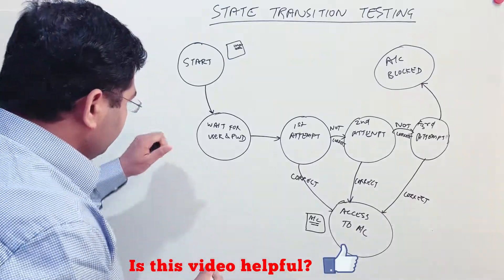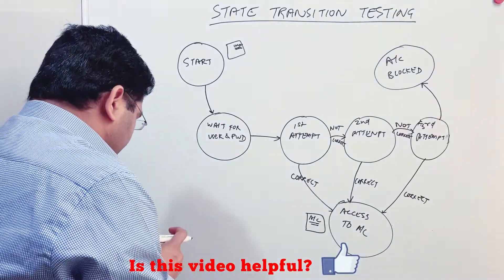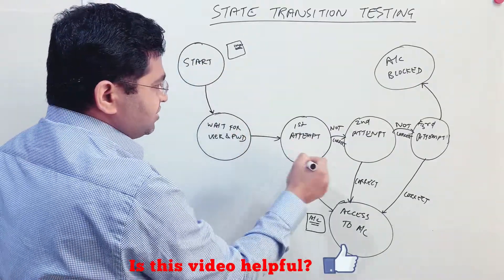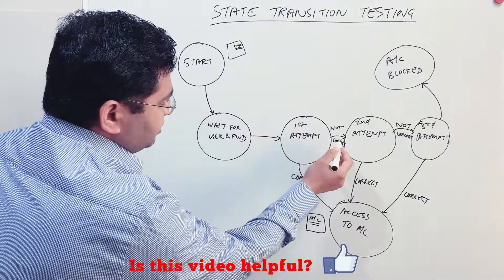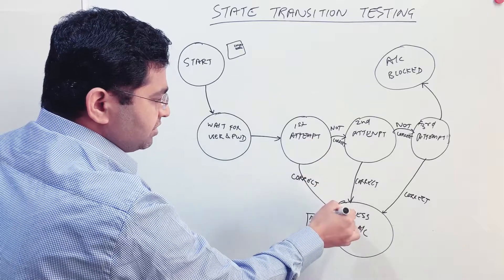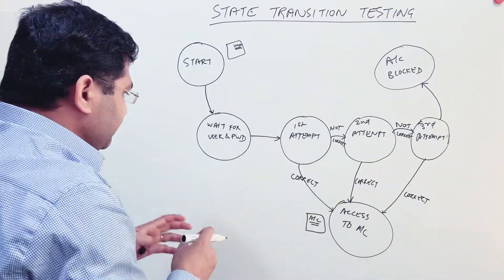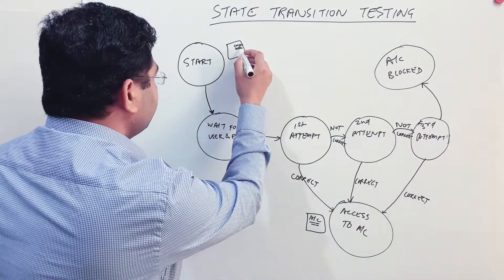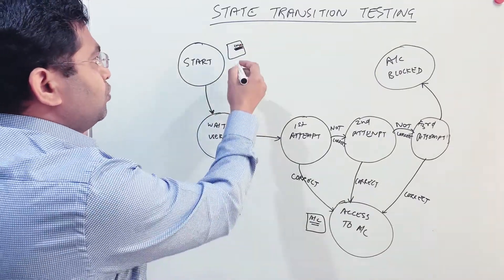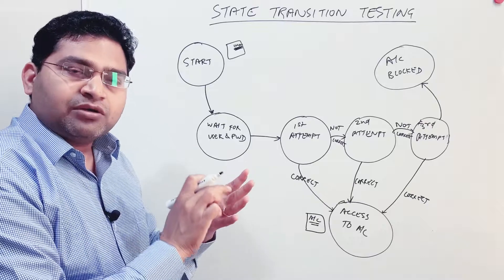The four key things to understand in state transition testing are: states, transitions, actions, and events. States are the round shapes in the diagram — start state, first attempt, second attempt, etc. Transitions are the arrows — 'not correct,' 'correct password' — representing the application flow moving from one state to another. Events cause transitions: for example, clicking the login link is an event, and that event results in a transition from the start state to 'waiting for username and password.'